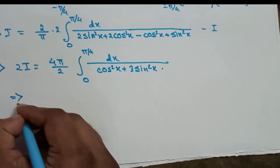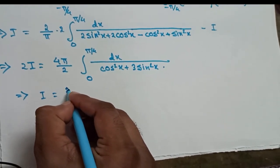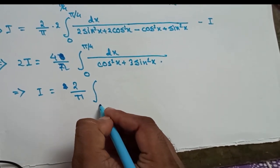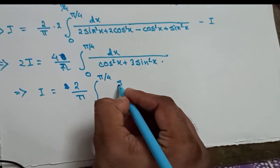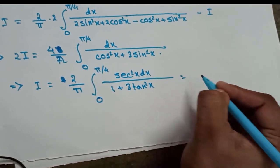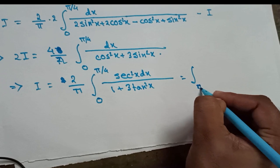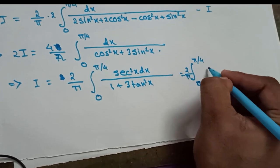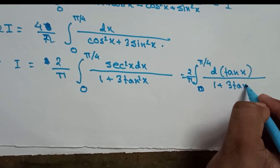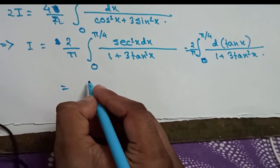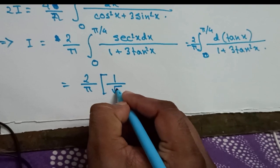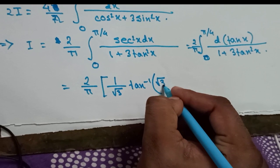This is 2/π, 0 to π/4, and then sec² x dx divided by 1 + 3 tan² x. Now I am writing sec² x as d(tan x) divided by 1 + 3 tan² x. So this one is becoming 2/π, then this is 3 tan² x, so by formula it is becoming 1/√3 tan⁻¹(√3 tan x) from 0 to π/4.